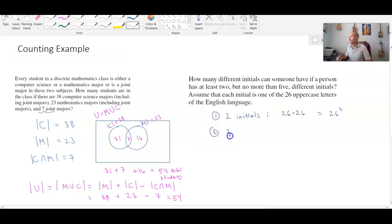The second possibility is to have three initials, and the three initials can be 26 for the first, 26 for the second, 26 for the third, so that'll give me 26 to the third different three initial combinations.